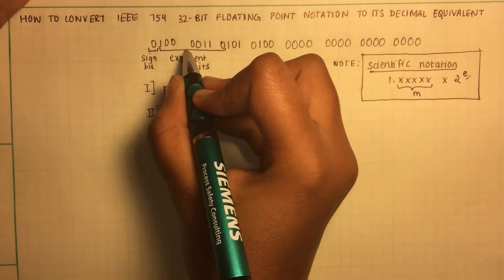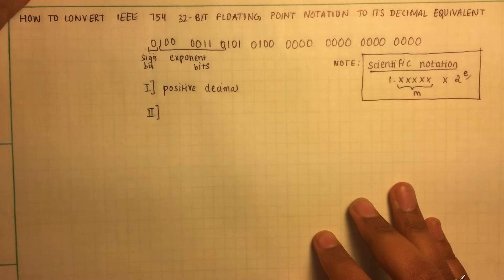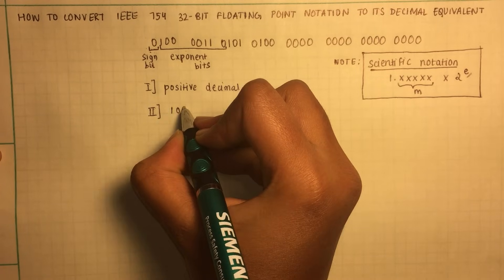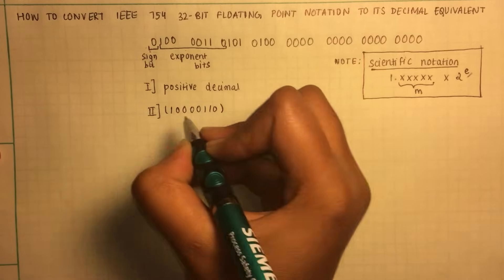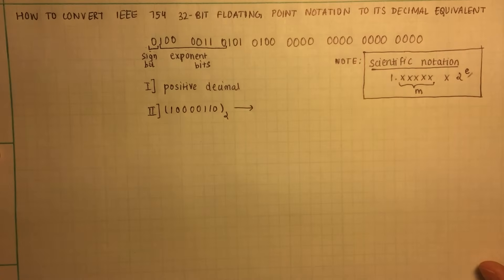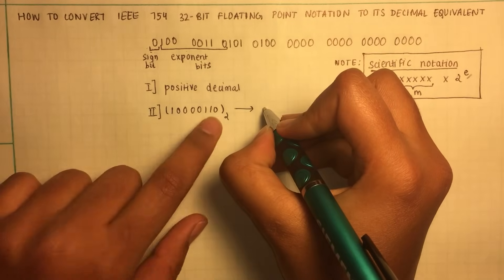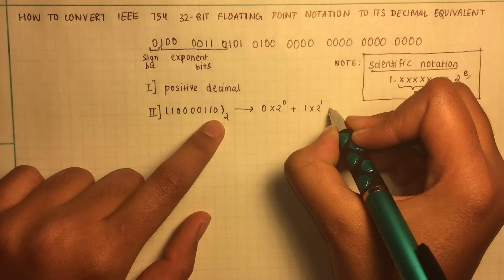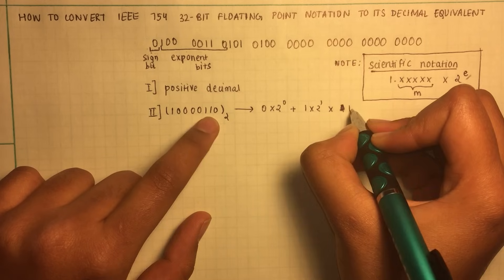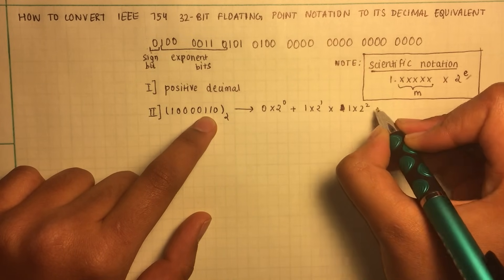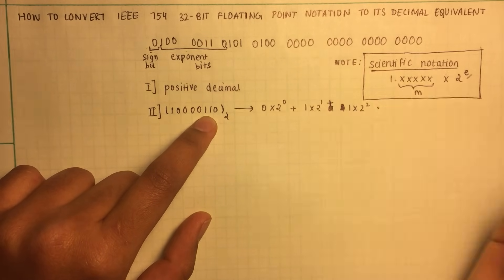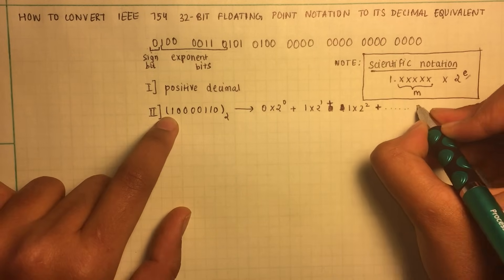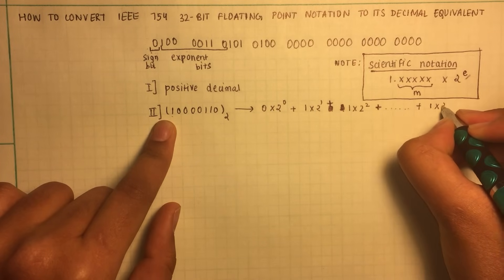Let's convert the binary representation into its decimal equivalent, just for the exponent. In this case it's 1, 1, 0. This is in binary. And converting this to its decimal equivalent would be zero times two to the zero, plus one times two to the one, plus one times two to the two, and so forth till we reach the last bit over here. And that would be one times two to the seven.